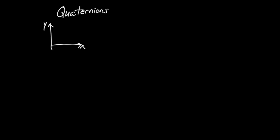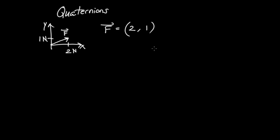Let's say we're working in two dimensions: we have the x-axis and the y-axis, and we have some force acting on an object. Let's say the force acts two units in the x-direction — two newtons — and one newton in the y-direction. Mathematically we represent such a force by a vector F, written as (2, 1): a two-dimensional vector living in the set R².